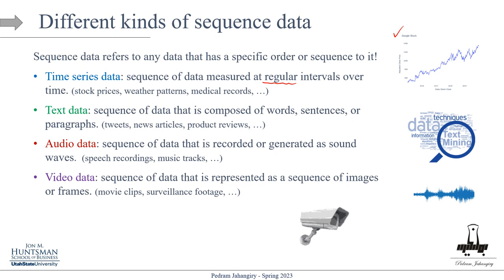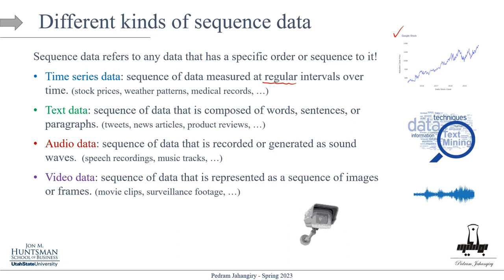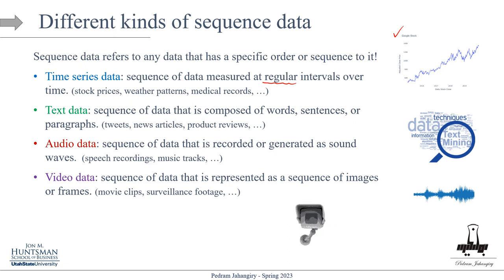Finally, the last type is image and video data, which I'll combine and call video data. It's a sequence represented as a sequence of images or frames. A single image itself can be considered sequence data depending on the task. Examples are all around us: movie clips, surveillance footage. This dataset is commonly used in video analysis applications such as action recognition, video surveillance, and video summarization. These are the kinds of sequence data we're going to talk about.